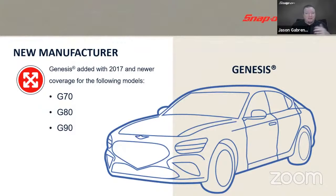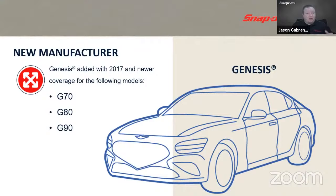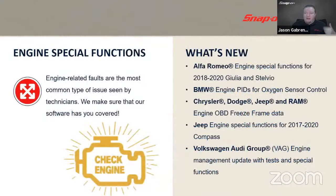That new manufacturer is Genesis. We added coverage back to 2017 through current on Genesis — G70, G80, and G90. Before 2017, the high-end Hyundai model was called the Hyundai Genesis, but in 2017 they spun it off into its own luxury brand to compete against BMW and Mercedes. There are over a hundred thousand of these on the road in North America right now, so you will see them coming into the shop.